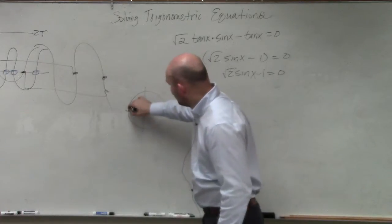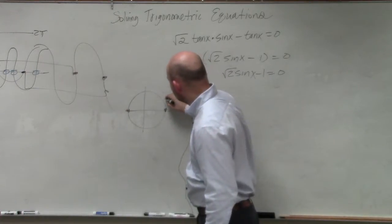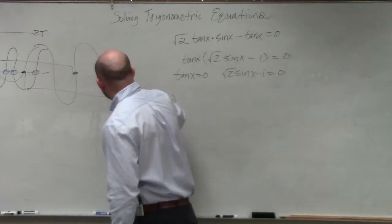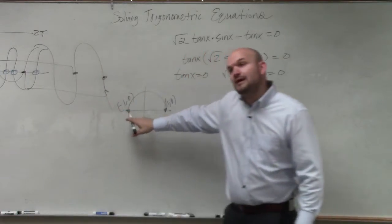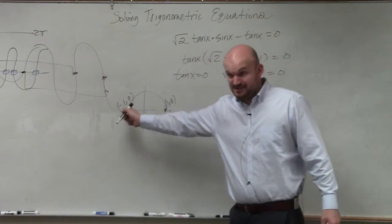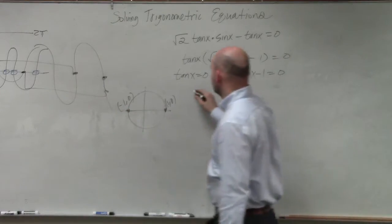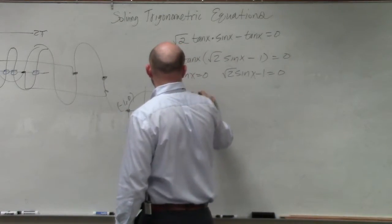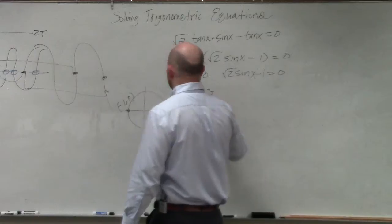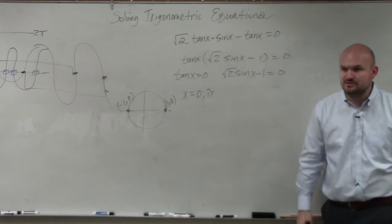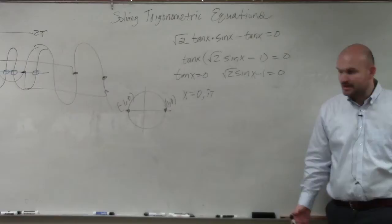So that occurs at those two points. That's 1 comma 0, and that's negative 1 comma 0. So our y coordinate is negative right here. So we can say the solutions are x equals 0 and at pi. Would you guys agree with me? Those angles make tangent equal to 0.